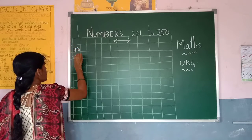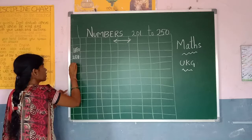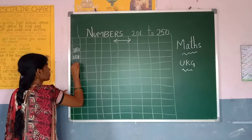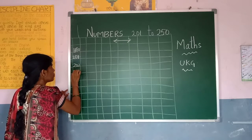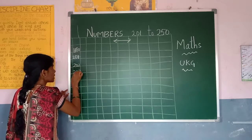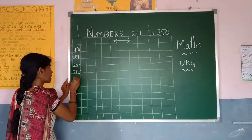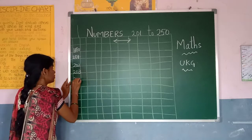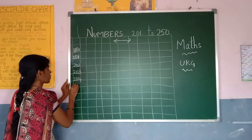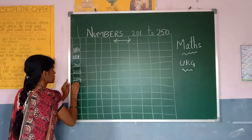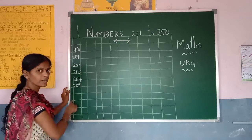2-0-1, 201. 2-0-2, 202. 2-0-3, 203. 2-0-4, 204. 2-0-5, 205.